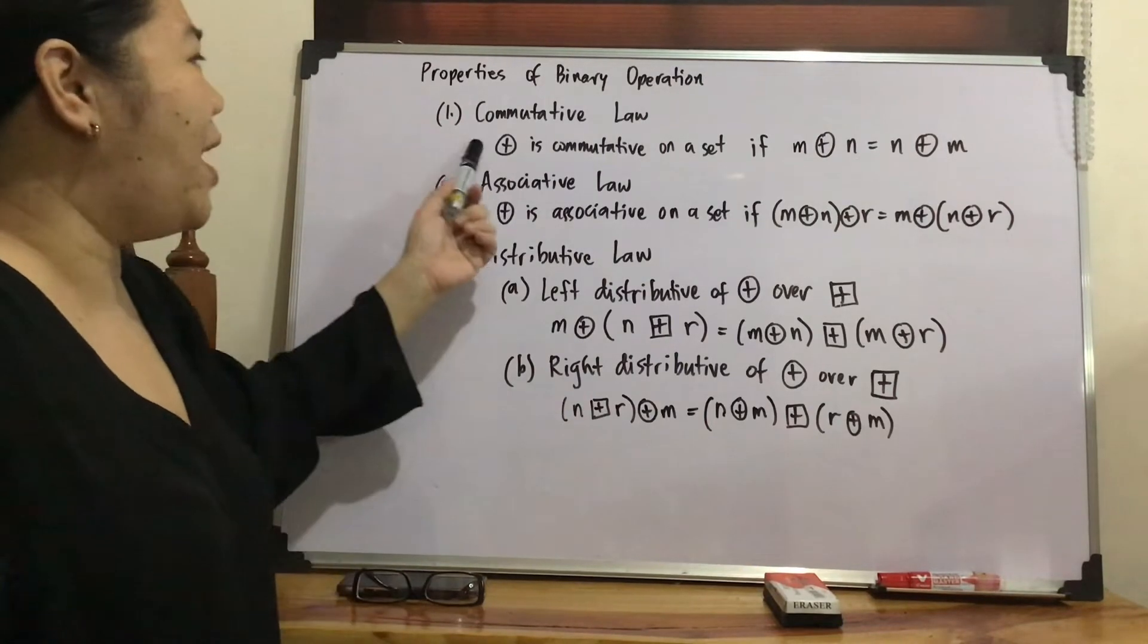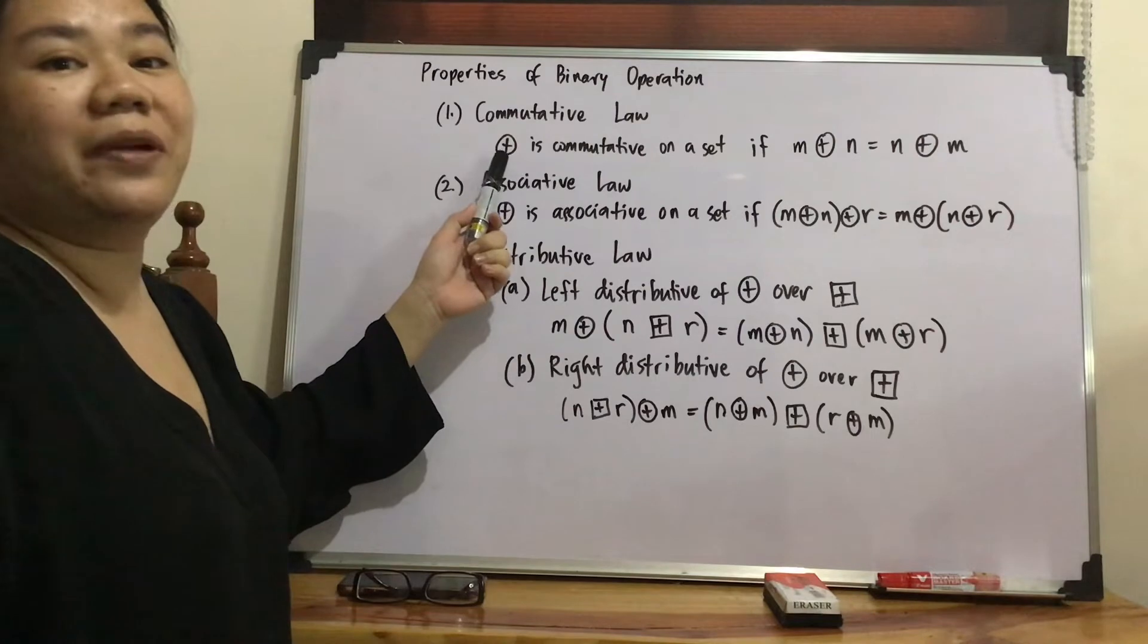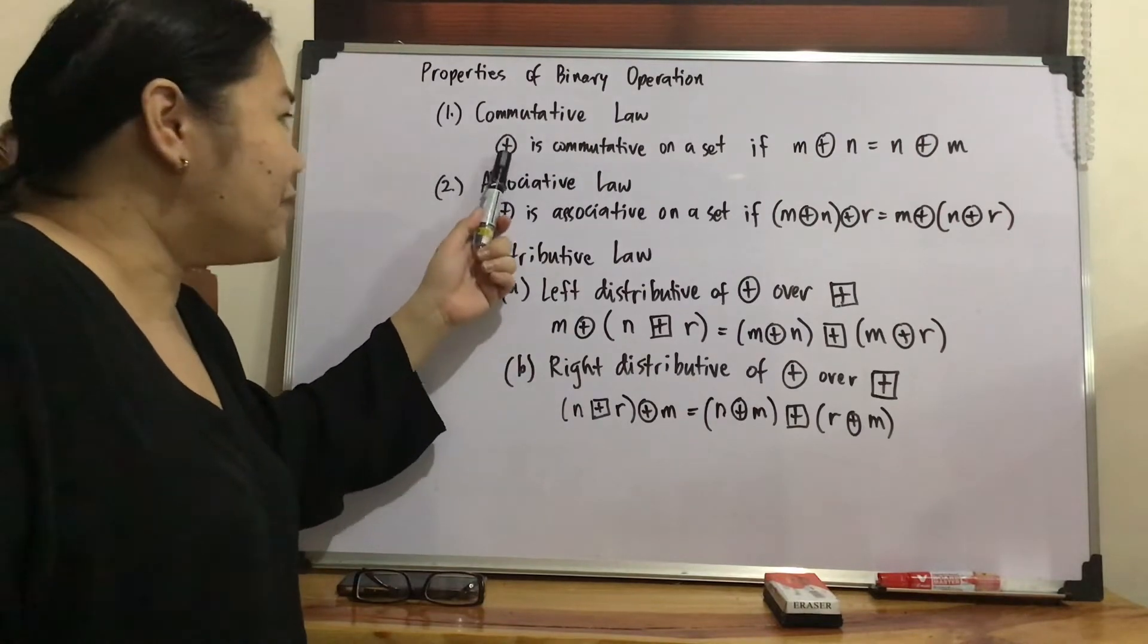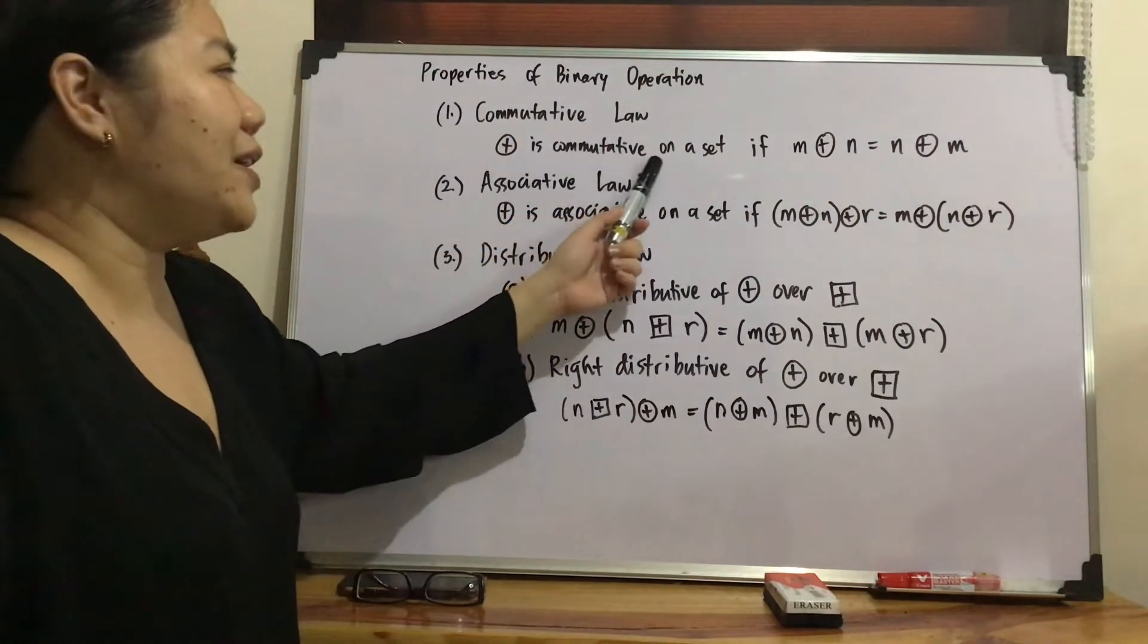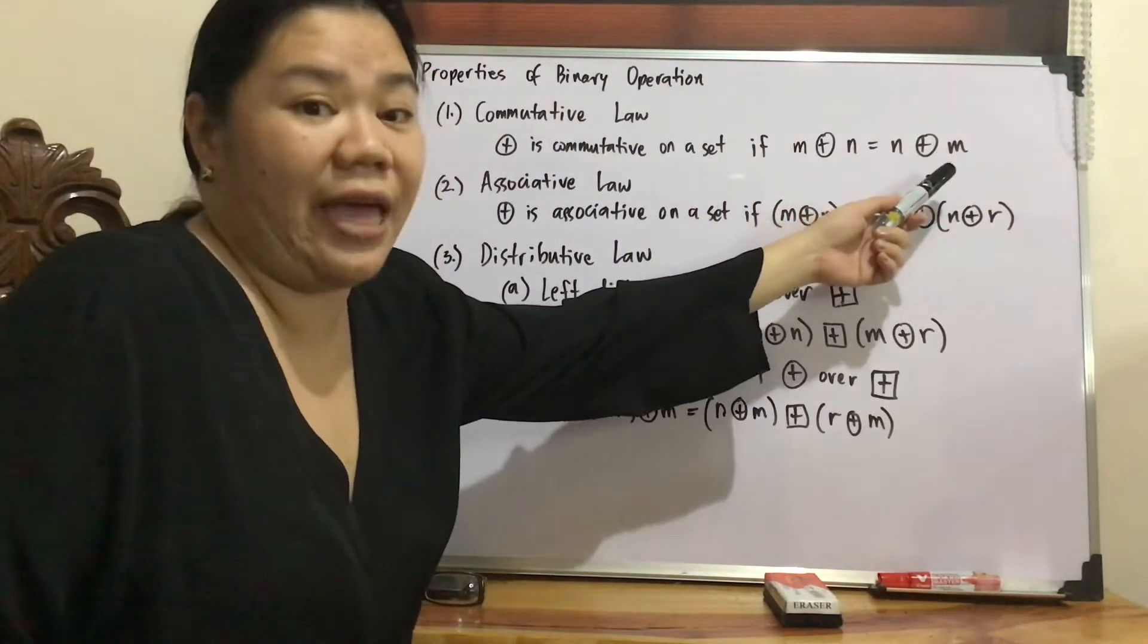So first, we have commutative law. So plus circle here is the binary operation we are considering. Plus circle is commutative on a set if M plus circle N is equals to N plus circle M.